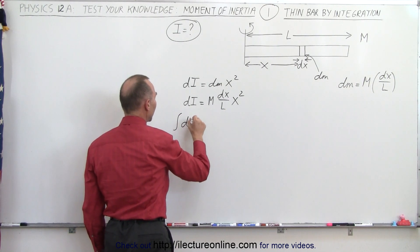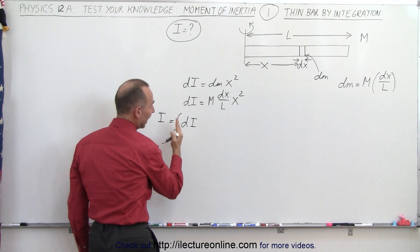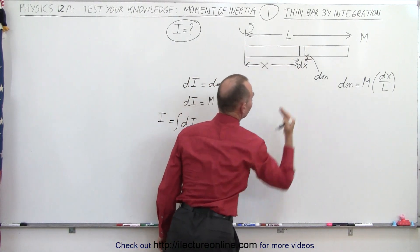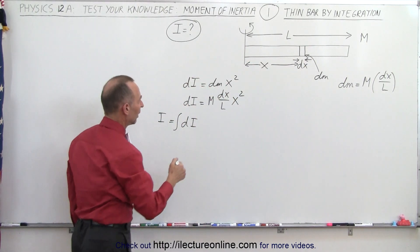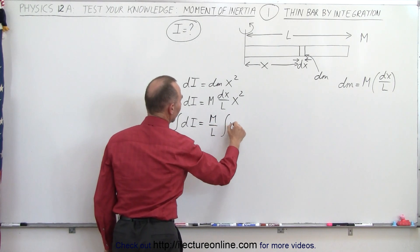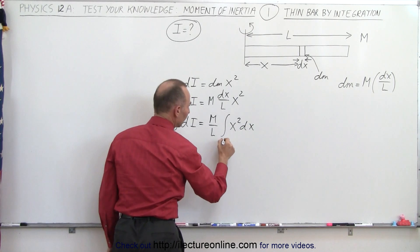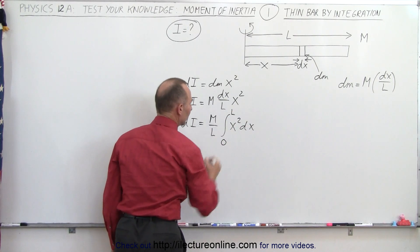So the integral of dI will give us the total moment of inertia. In other words that's adding up all the little dx segments or dm segments, and so this will be equal to M over L times the integral of x squared dx. And of course we're going to integrate that from x equals 0 to x equals L.